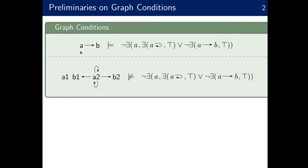This graph condition on the right says essentially that there should not be an A node that has a self-loop or that does not have an edge to a B node. That's why this graph satisfies the condition — the single A node has no self-loop and has an edge to a B node. Another example: a slightly bigger graph on the left with the same graph condition does not satisfy it, because the A1 node does not have an edge to a B node.